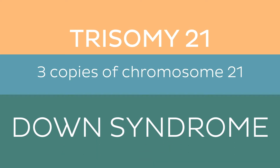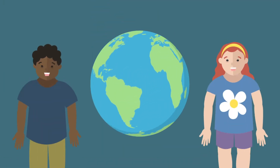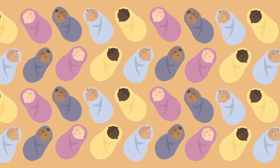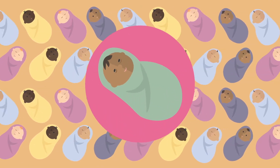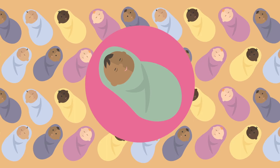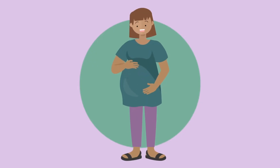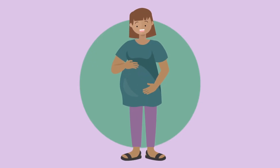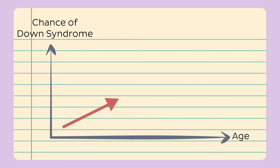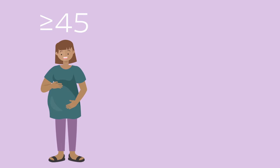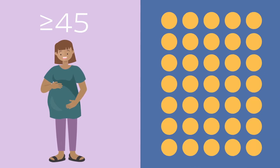Down syndrome is one of the most common genetic disorders in the world. For every 1,000 babies born alive, it is estimated that one will have Down syndrome. However, this frequency varies depending on several factors. For instance, the mother's age at the time of pregnancy plays a significant role. As a woman gets older, her chances of having a baby with Down syndrome increase. In women aged 45 or older, for every 30 to 35 pregnancies, one baby will be born with Down syndrome.